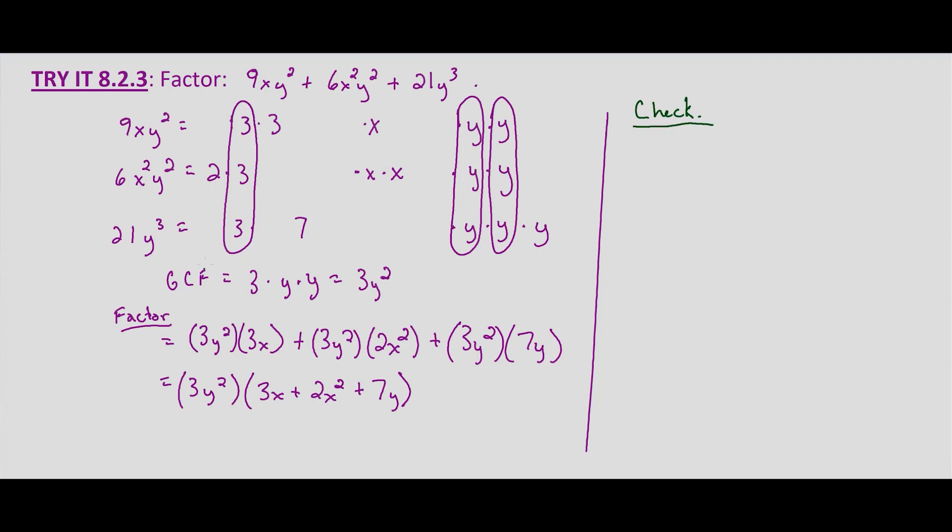it's pretty much just the reverse of what we already did. We're going to end up with this line right here, as long as we did everything correctly. We're just redistributing that 3y².